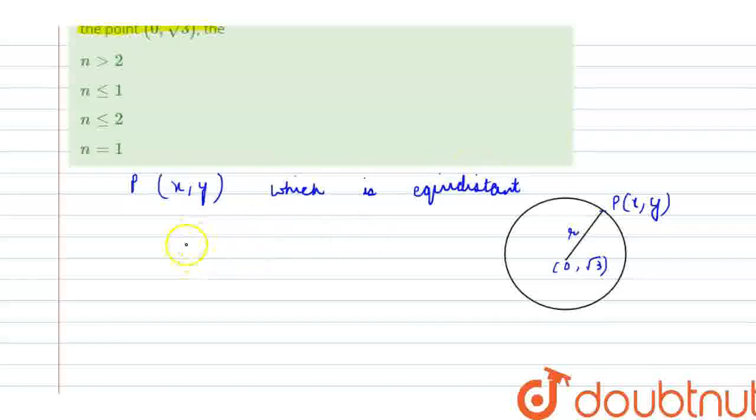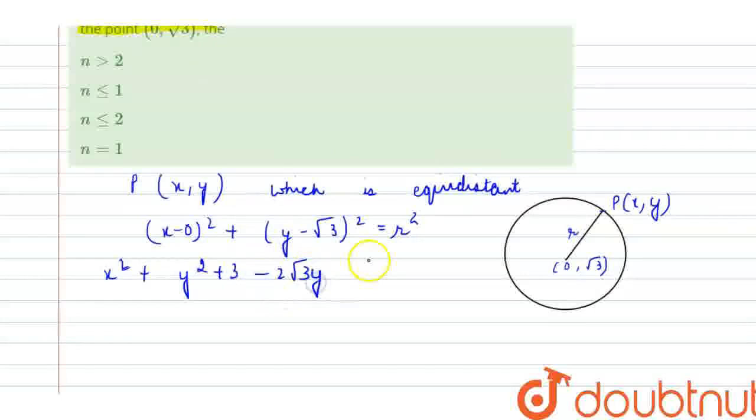So, using it in the equation of circle, it would be (x - 0)² + (y - √3)² = r². So that is x² + y² plus... it would be minus here, so it would be minus 2√3y equals r².